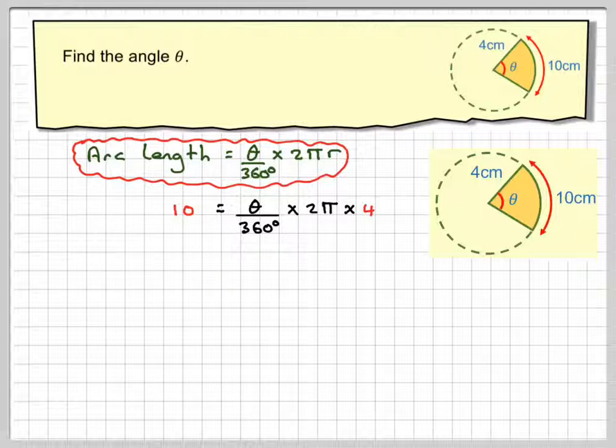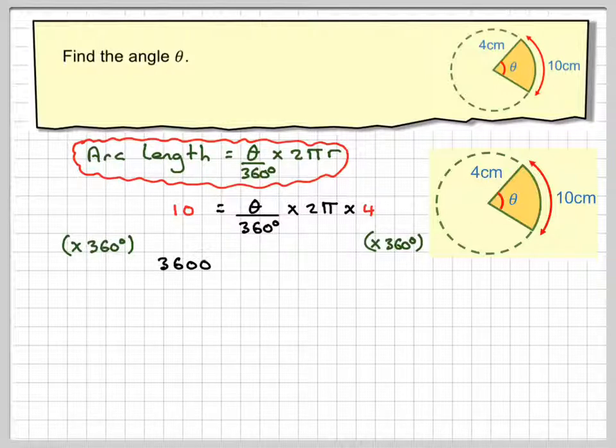Right, now proceed with care, don't try to do too much at one time. The opposite of dividing by 360 is to multiply by 360. So 10 times 360 is 3600 and that's equal to theta and then 2 times 4 is 8, so it's going to be times 8 pi.